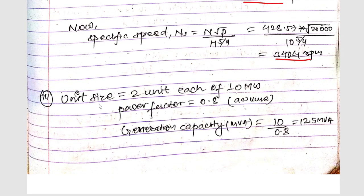The plant capacity is 20 megawatts, so we assume 2 units, each of 10 megawatts. Assuming power factor of 0.8, the generation capacity in MVA is 10/0.8 = 12.5 MVA. So 12.5 MVA generation capacity, each of 2 units.